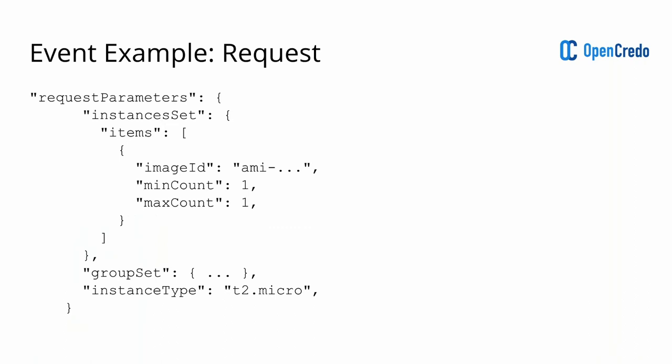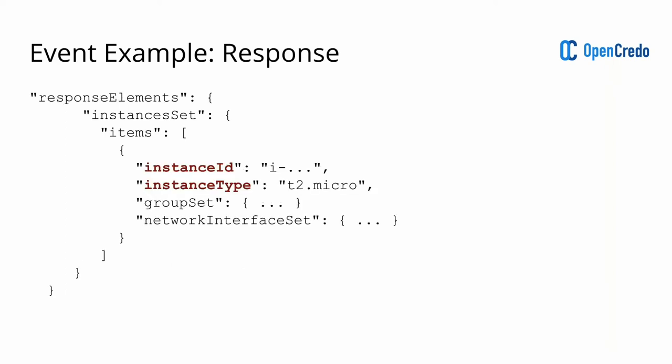Every CloudWatch event contains common information like user details — most importantly the username and access key ID used for the operation — as well as the event name and the region where the event originated. In a run-instances case, the request says 'create these instances of this AMI and instance type.' In the response you get back the instance ID and instance type, which is what we are actually interested in capturing.